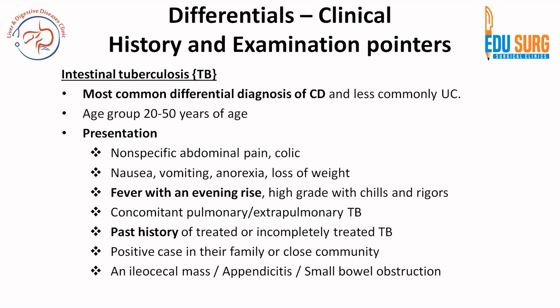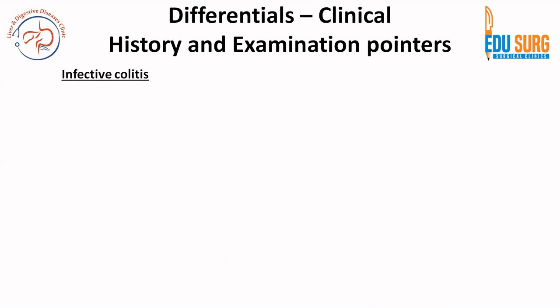Presentation can be non-specific abdominal pain and colic, nausea and vomiting, anorexia and weight loss — usually when the patient has an intestinal stricture. Fever with evening rise, high grade, chills and rigors is the classical fever of intestinal TB. The patient can have simultaneous pulmonary or other site extra-pulmonary TB, or a past history of treated or incompletely treated TB. In family history, there can be a positive case in the family or close community. Patients can also present with an ileocecal mass, tubercular appendicitis, or small bowel obstruction due to stricture.